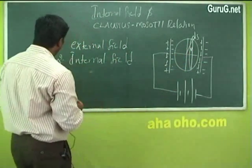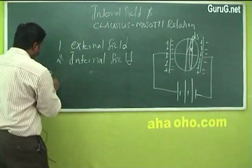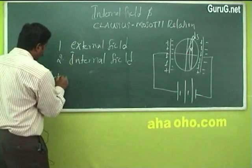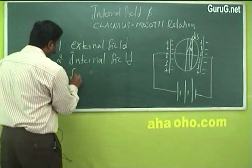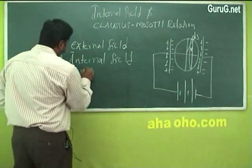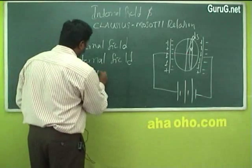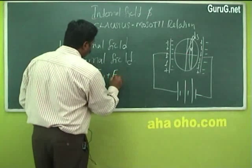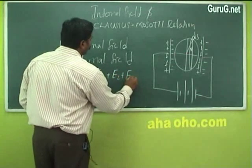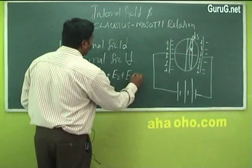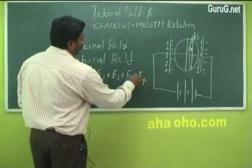The internal field at the center is due to the following factors: E_internal = E1 + E2 + E3 + E4.